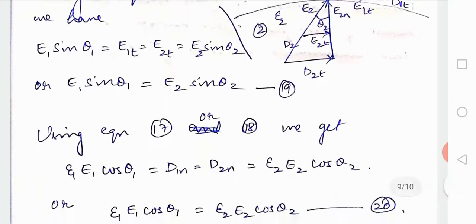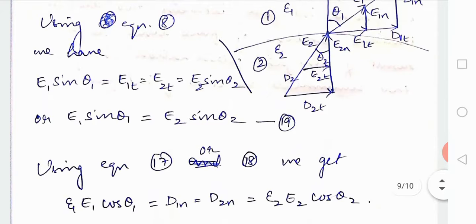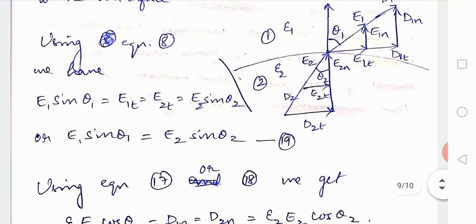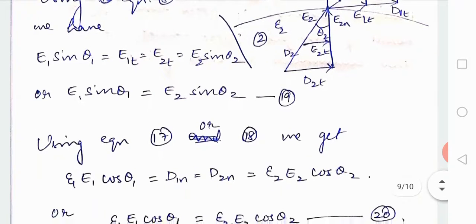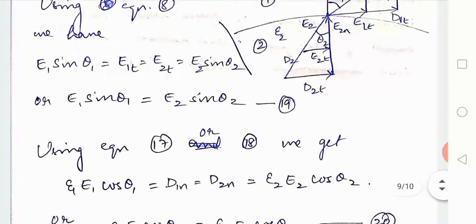Using 17 or 18 we get epsilon E1 cos theta1 is equal to D1n and D2n is equal to epsilon 2 E2 cos theta2. That is also taken from the figure. You can see the D2 value and D2n values.